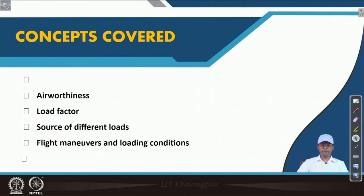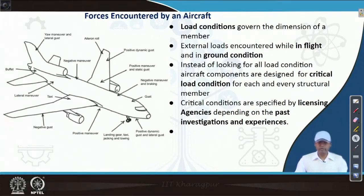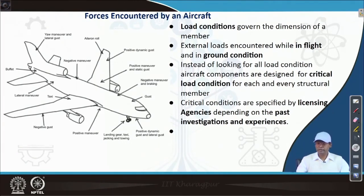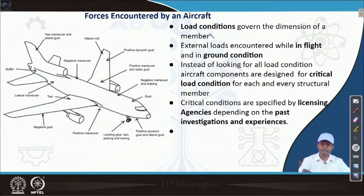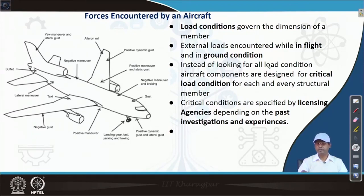According to flight maneuver, we will see how loading conditions change. As a basic consideration on loads: load conditions govern the dimensions of a member — under load we generally need to change the dimension or material, because it has to withstand and support the load to serve its purpose. External loads are encountered in two conditions: in flight and on the ground. In ground operations, loads come from towing, jacking, pulling, and taxiing; during flight, different maneuver loads come.